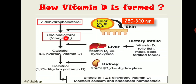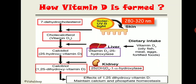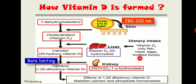Cholecalciferol enters the liver via circulation and is converted to calcidiol by the 25-hydroxylase enzyme located in the liver. Calcidiol then goes to the kidney where it is converted to 1,25-dihydroxyvitamin D — the active form — by 1-alpha hydroxylase enzyme, which is the rate-limiting step. This enzyme is located in the proximal convoluted tubule.